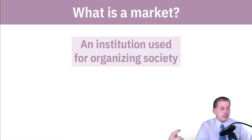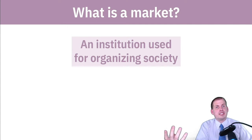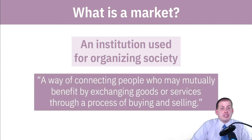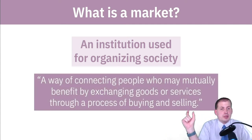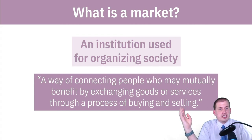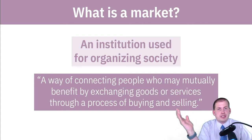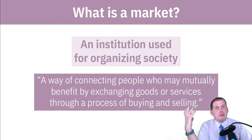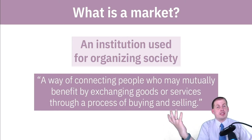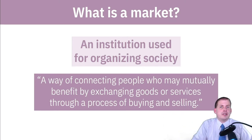Markets help coordinate behavior and coordinate action between people. A market specifically allows people to connect so that they can exchange goods and services through buying and selling or through negotiating. That's the specific market institution — it allows people to coordinate behavior.